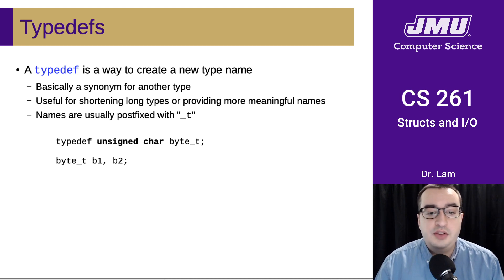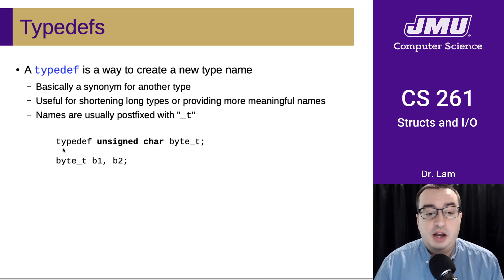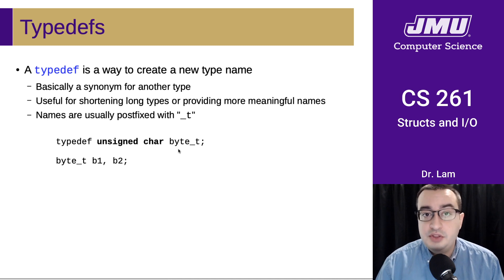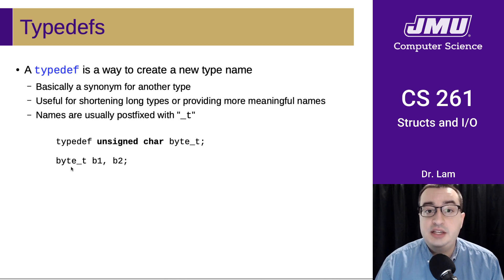For instance, if we didn't want to have to type out unsigned char everywhere that we wanted to store a single byte, we could create a typedef for it. We could say, I want to create a typedef — the actual type is going to be unsigned char, but the name that I'm giving to this typedef is byte_t. So after making this declaration, anywhere I want to create a variable that's just a single byte, I can do so using the byte_t type.